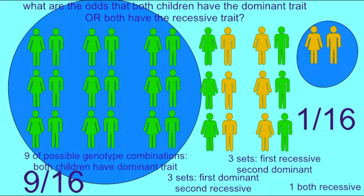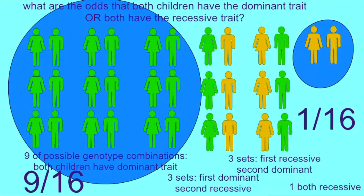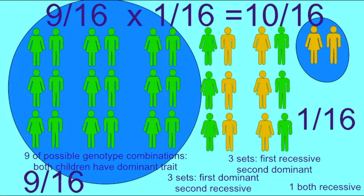Plus the odds that both would have the recessive trait, which would be 1 sixteenth, producing the odds of 10 sixteenths. 9 sixteenths plus 1 sixteenth equals 10 sixteenths — the odds that either both children will have the dominant trait or both children will have the recessive trait.